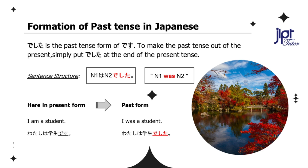Formation of past tense in Japanese. Deshita is the past tense form of desu. To make the past tense out of the present, simply put deshita at the end of the present tense: N1 wa N2 deshita — meaning 'N1 was/were N2.' Let's understand this concept by taking an example. In present form, 'I am a student' is: Watashi wa gakusei desu. In the past form, 'I was a student' is: Watashi wa gakusei deshita.